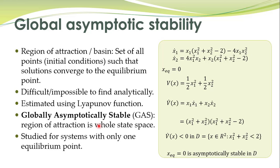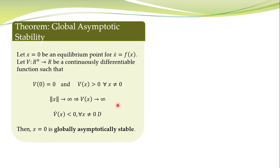If there are two equilibrium points, the second equilibrium point is one possible initial condition which will not converge to the equilibrium point under consideration. Therefore, that system cannot be globally asymptotically stable. So now this definition is clear, and we move on to the Lyapunov theorem which is utilized to study global asymptotic stability of an equilibrium point.